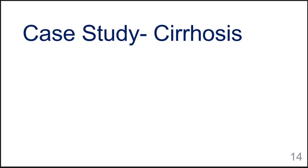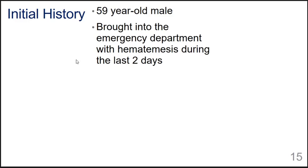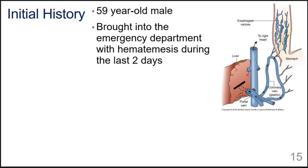We'll look now at a case study that focuses on cirrhosis. The initial history is a 59-year-old male brought into the emergency department with hematemesis during the last two days. Hematemesis is the vomiting of blood. If that blood has been digested, it will often take on a coffee ground appearance, but fresh red blood indicates a fresh bleed, possibly an upper bleed. Esophageal varices are an example — veins that can dilate so much that they rupture and, when vomited up, appear as bright red blood. Here's a diagram to remind you of esophageal varices that can occur with portal hypertension in cirrhosis.